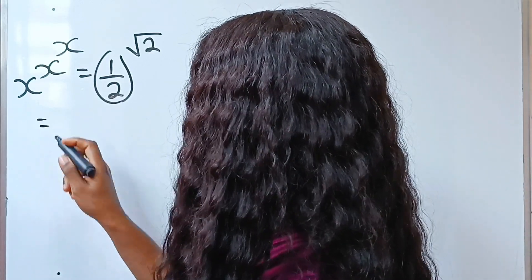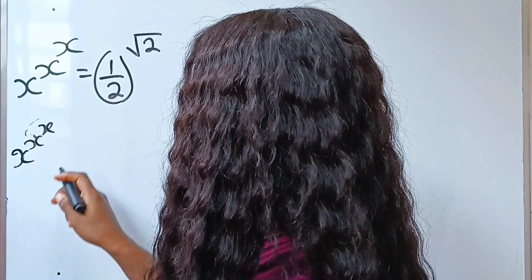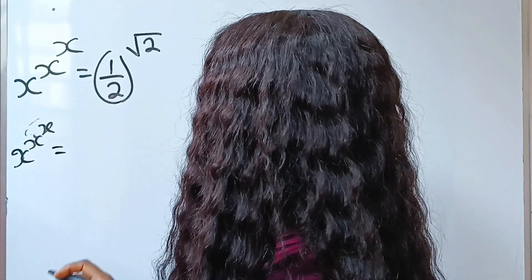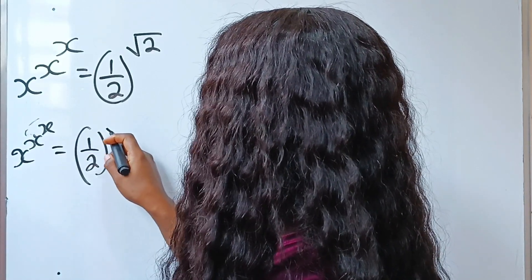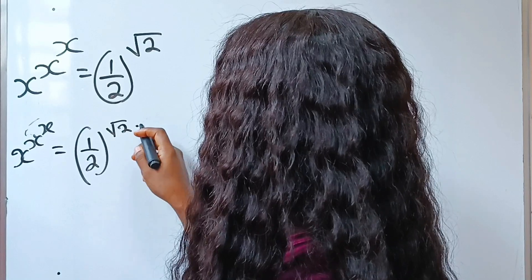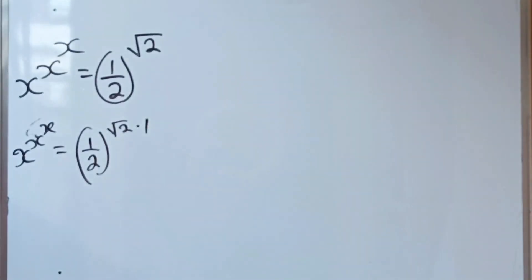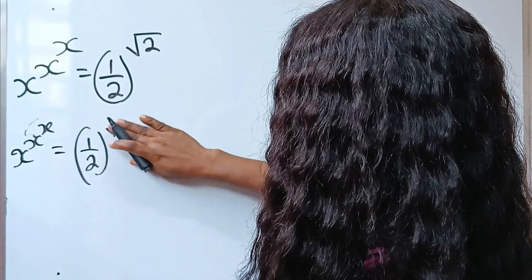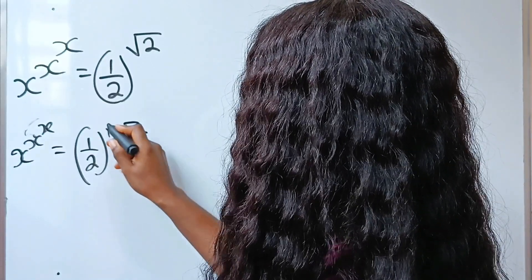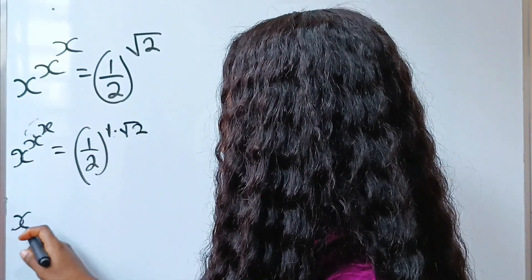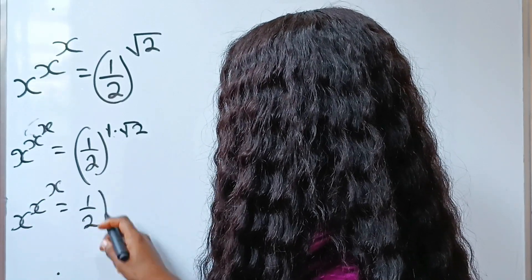So this is equal to: we have x to the power of x to the power of x is equal to 1 over 2 raised to the power of square root of 2 multiplied by 1, or 1 multiplied by root 2. So I can write that x to the power of x to the power of x is equal to 1 over 2.